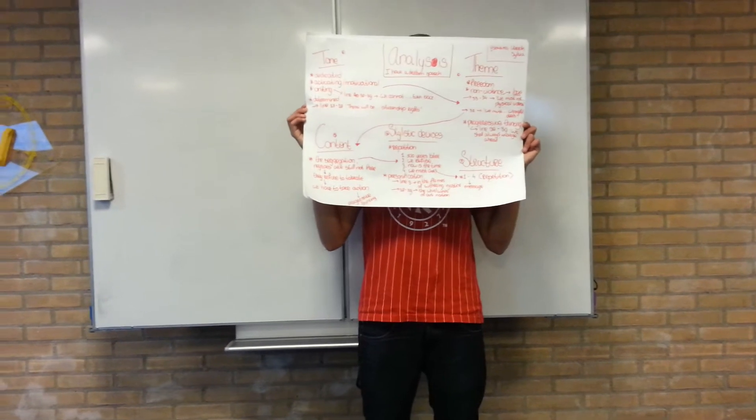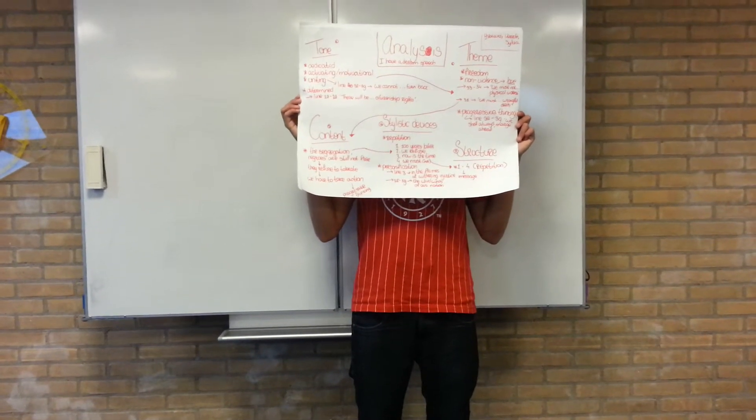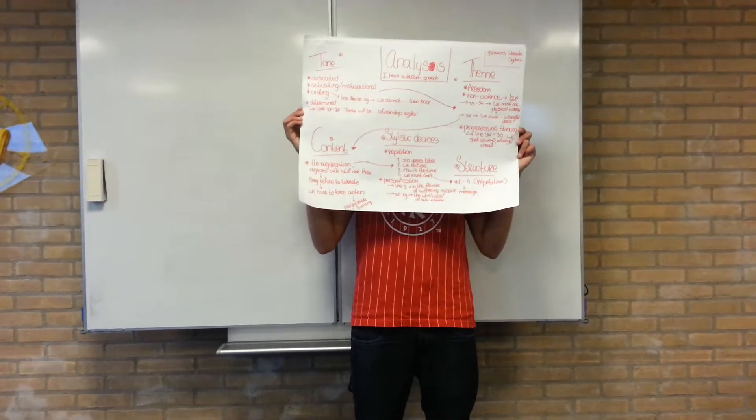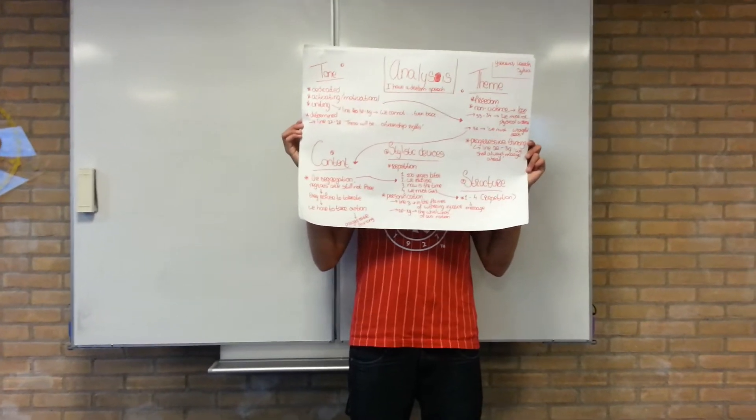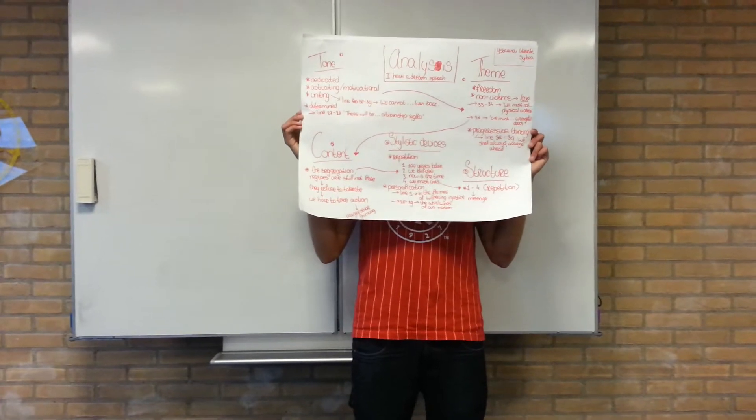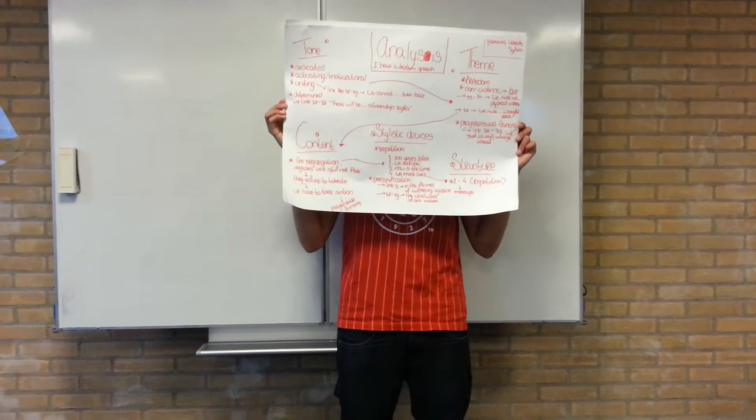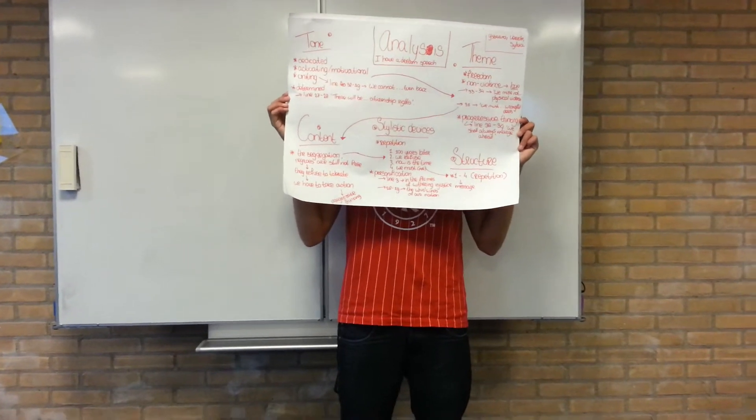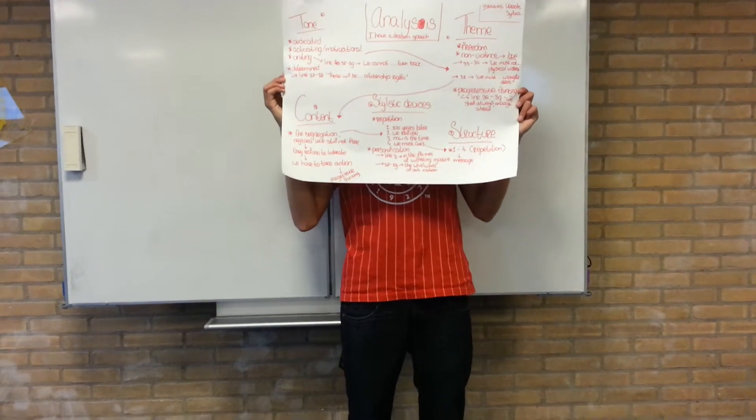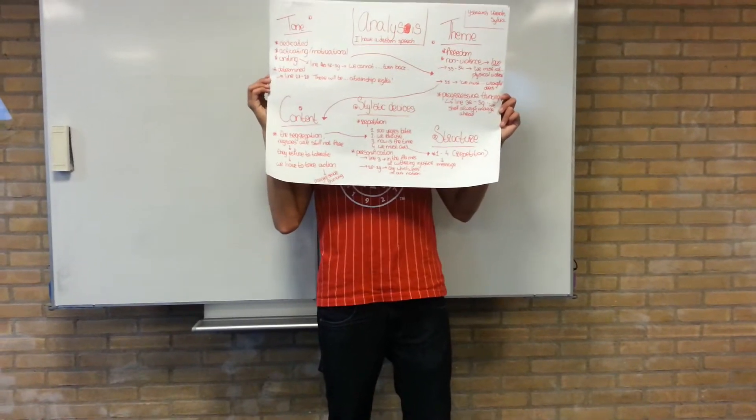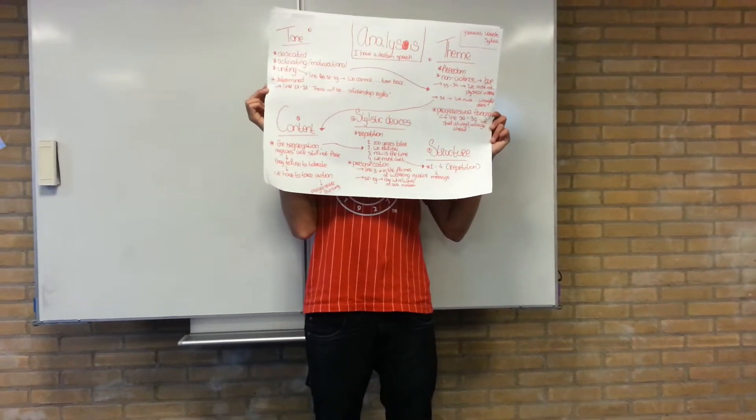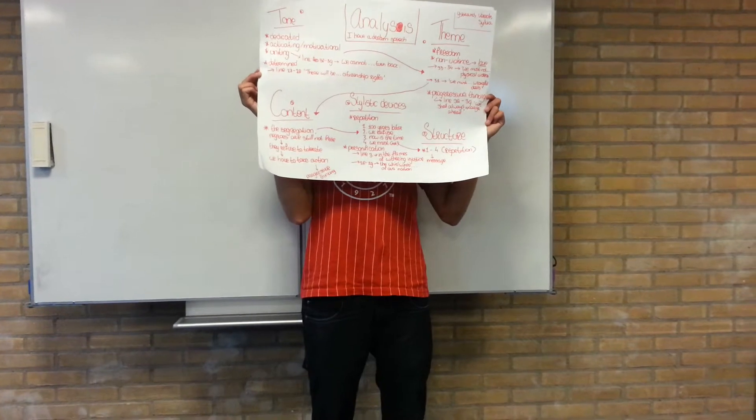That can be referred back to the content as well, because the content is also talking about freedom and the non-violence. In the freedom he says that the segregation is not right because the Negroes are still not free and he wants to change that. He wants people to realize that they should not tolerate something like this. He says we need to take action and that's where the progressive thinking part comes in. And they get to the stylistic devices, and those stylistic devices actually help the speech get more strength.